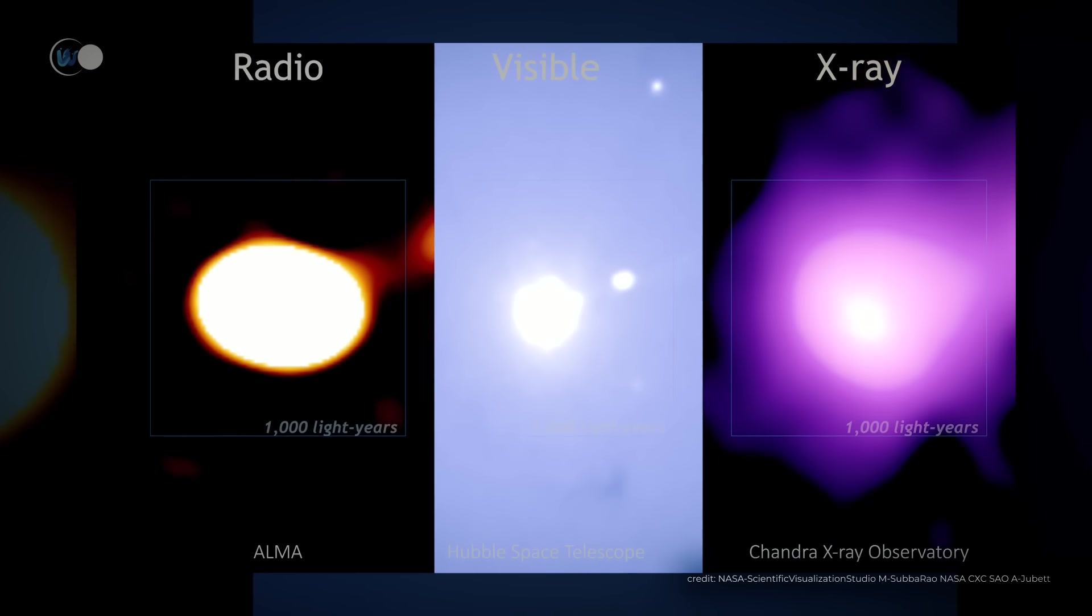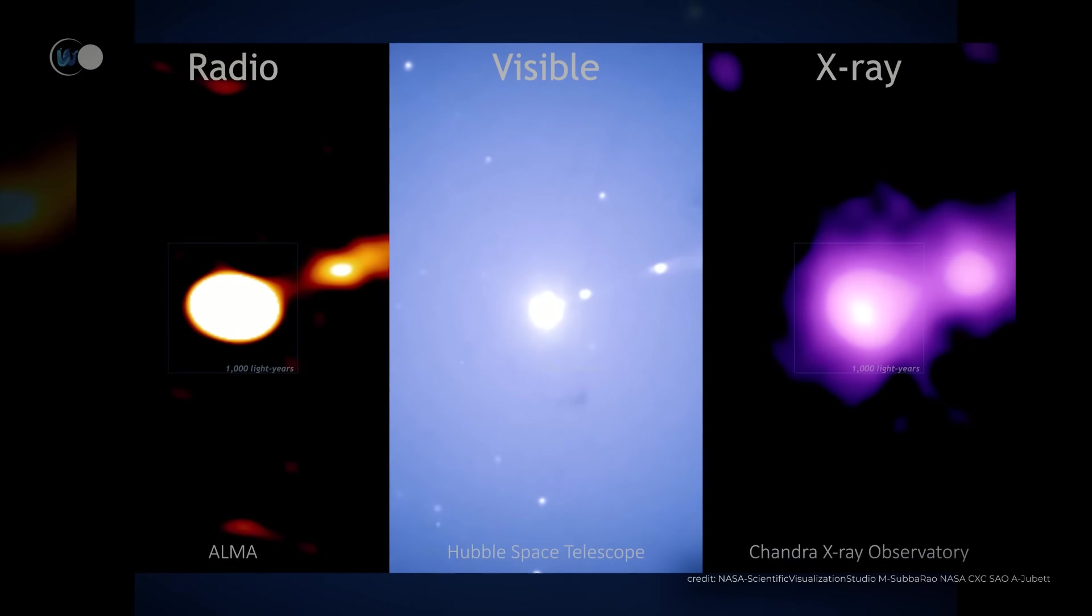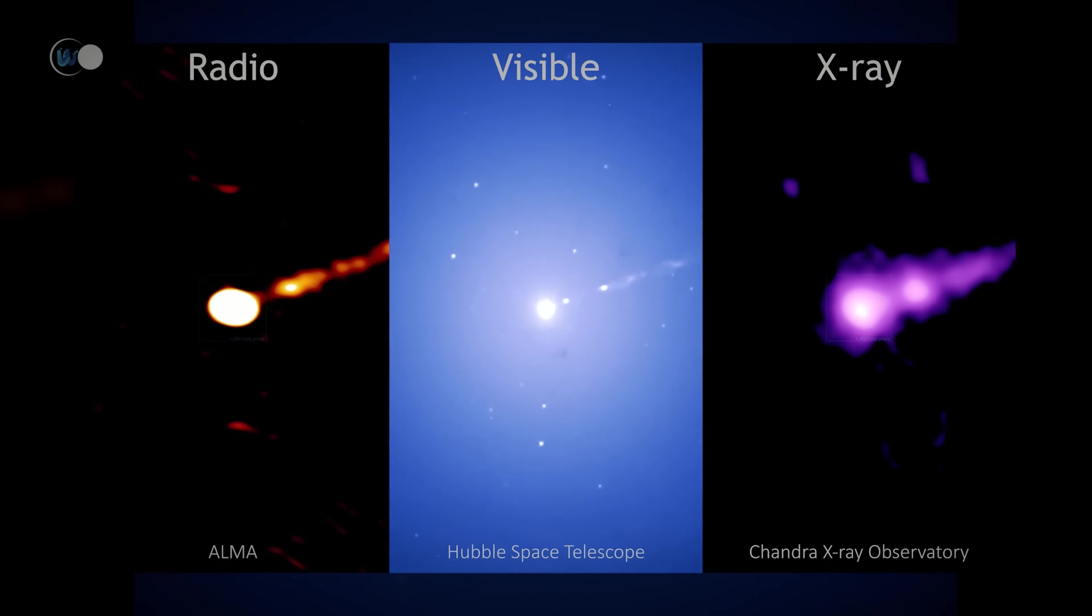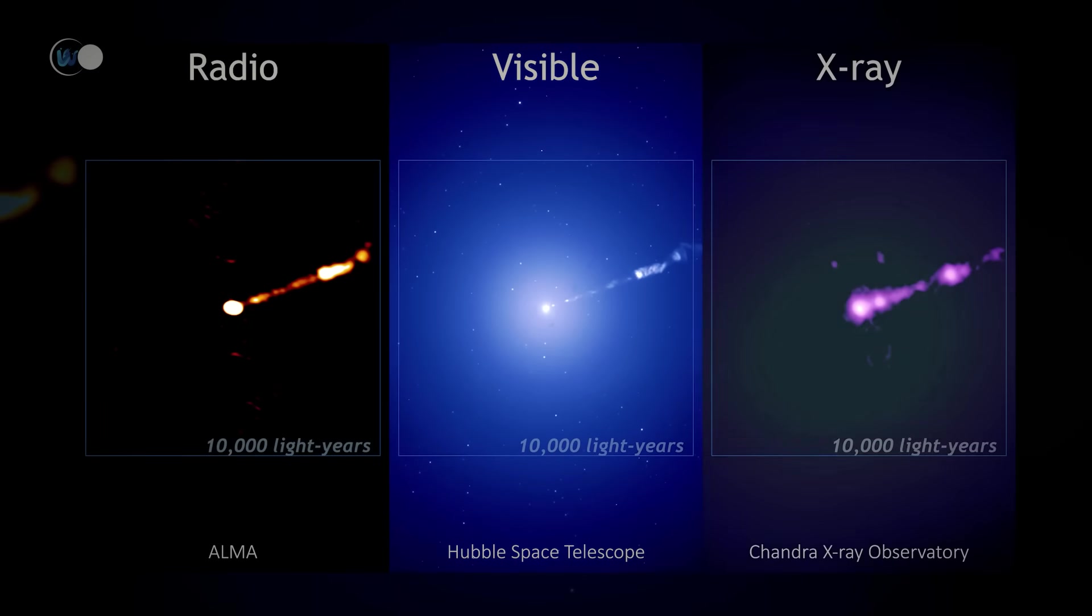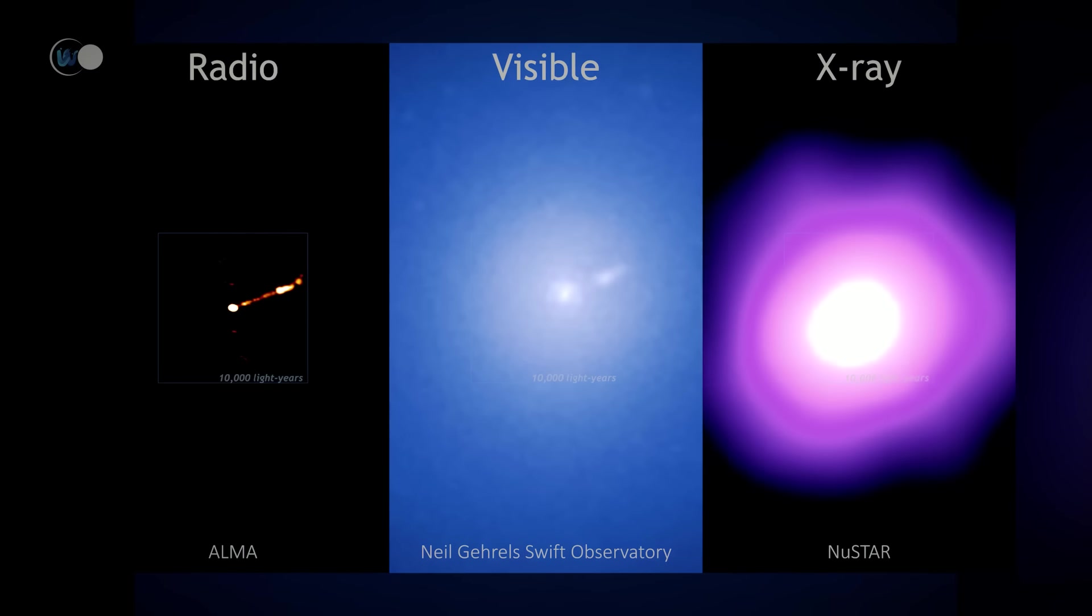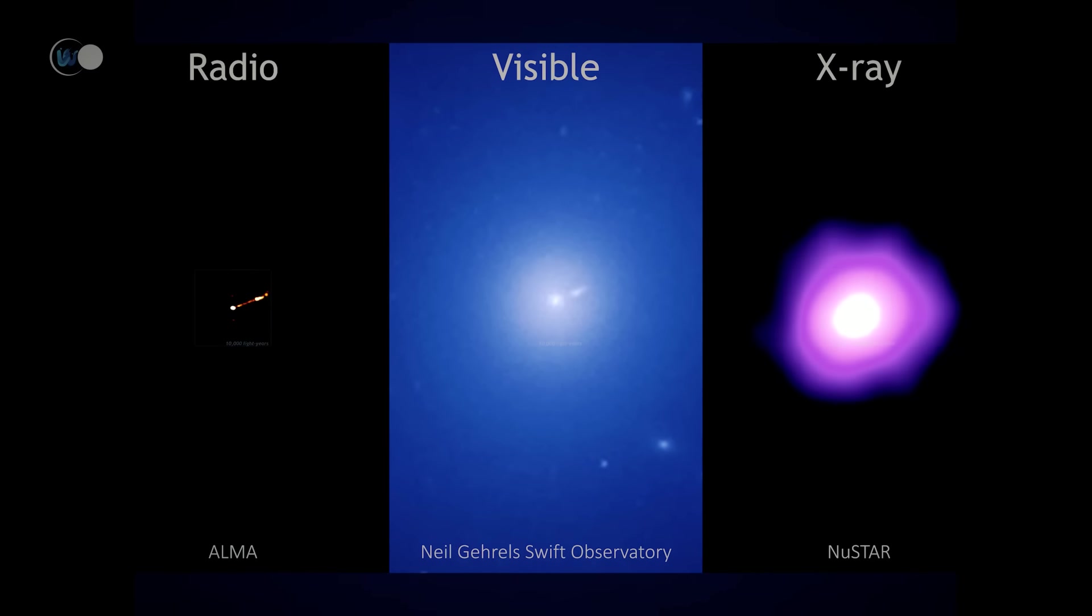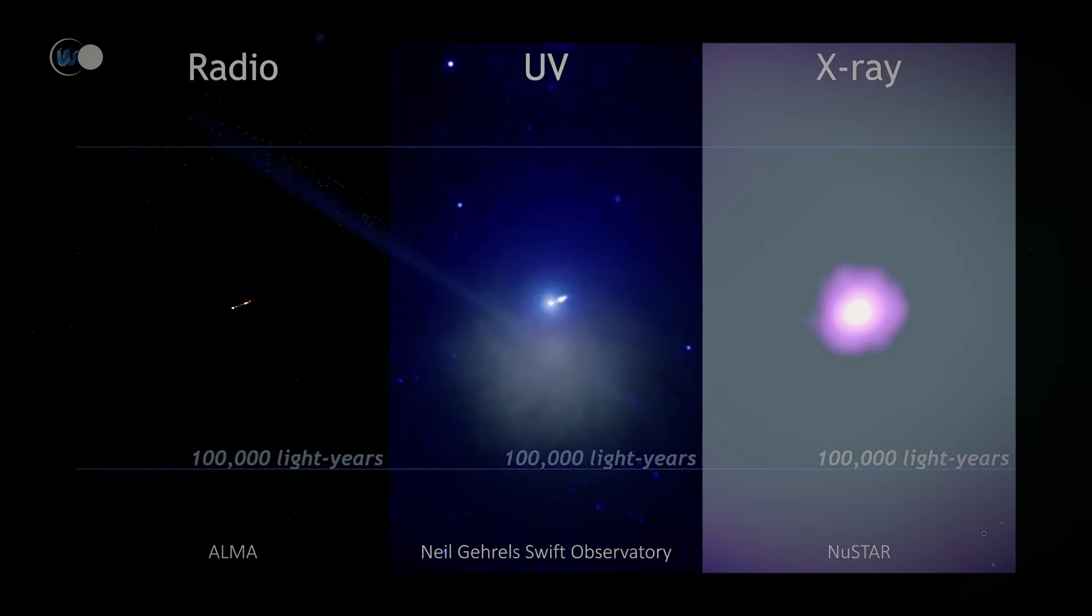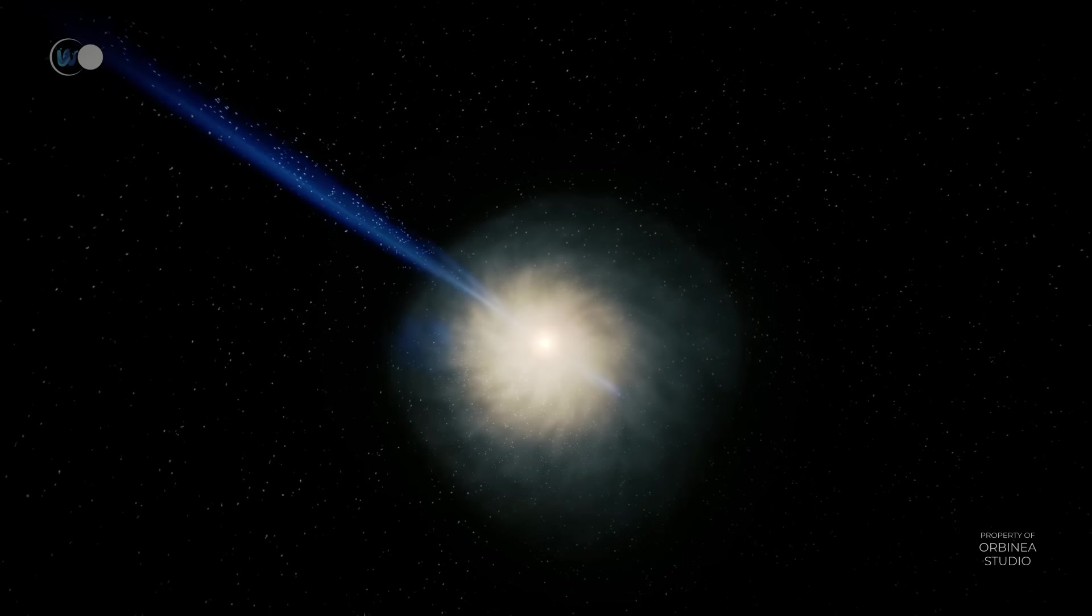Since its discovery, Messier 87 has been a favorite target for observation by amateur and professional astronomers alike, thanks to its proximity to Earth and its high luminosity in the sky. But what are its special characteristics?